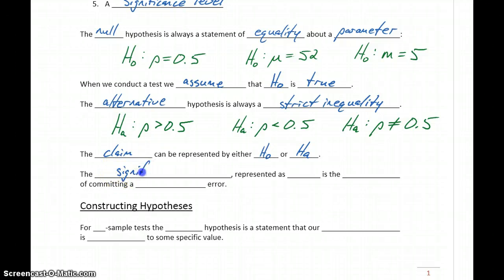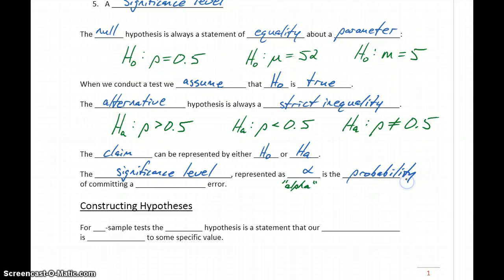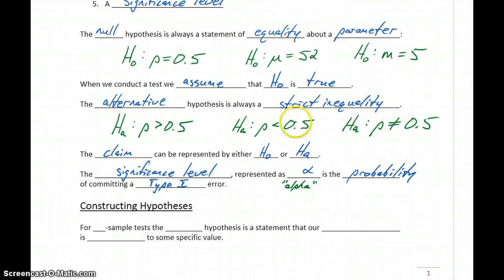Our last piece is the significance level, which we're going to represent with the Greek letter alpha — it's sort of a cursive A shape. The significance level alpha is the probability of committing a type 1 error. We'll go into more detail about what a type 1 error is versus a type 2 error. But these are the basic pieces that we need: a null hypothesis that's a direct equality, an alternative hypothesis that's always a strict inequality, a claim which we'll use to construct those hypotheses, and a significance level which tells us about the potential error in our test.